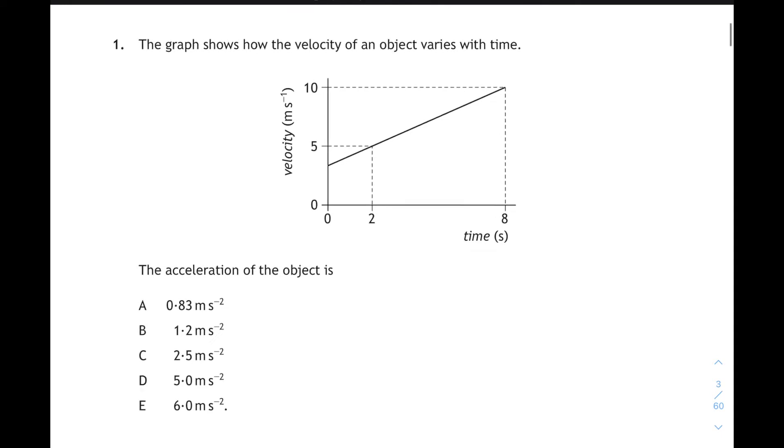This is equations of motion, graphs of motion really, and we're asked for the acceleration of the object. So we go straight to our relationship sheet. A equals V minus U over T. Final speed was 10, the initial speed was 5, and the time it took between those two points was 6 seconds between 2 and 8. So 5 over 6 is 0.83 meters per second squared. And that corresponds to answer A. 0.83 meters per second squared. Okay, moving on.